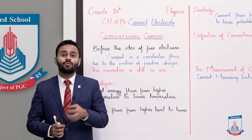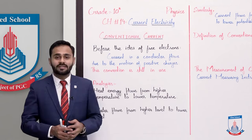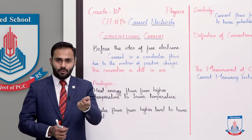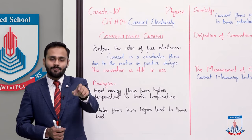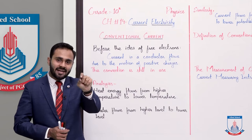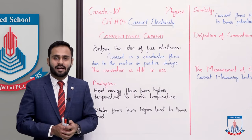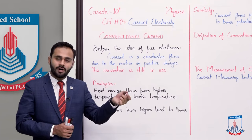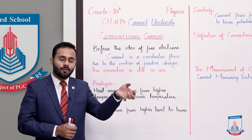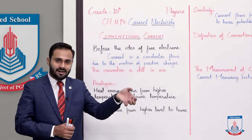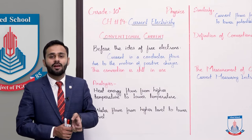The question is — because of some analogies — for example, heat energy flows from higher temperature to lower temperature. Like when a spoon is at higher temperature at one end, heat energy flows toward the cooler end. When one end is warm, the second end gradually becomes warm too — that's why heat energy flows from higher temperature to lower temperature.